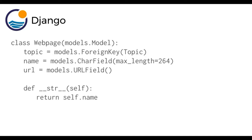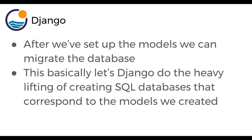Then we can have a web page model where we have the topic — again it's a foreign key — the name, which is a character field, and then URL as models.URLField. We can then have a specific method to return the actual name, so if you say print web page it grabs the name. After we set up the models, we can migrate the database. Django does the heavy lifting of creating SQL databases that correspond to the models we created — all you have to do is define those classes and then with a very simple command, Django is going to do all the heavy lifting. Django can do this entire process with just python manage.py migrate.